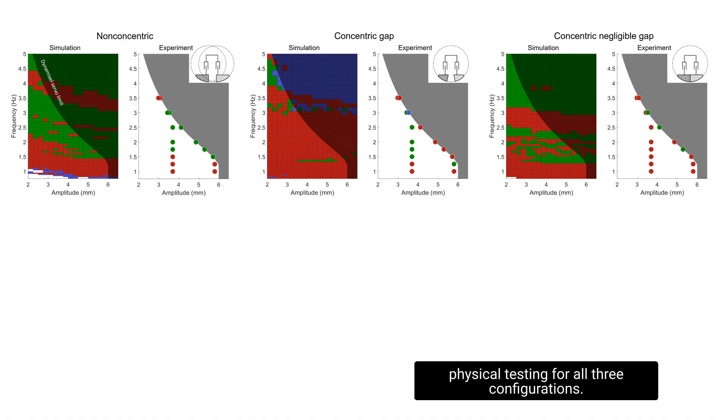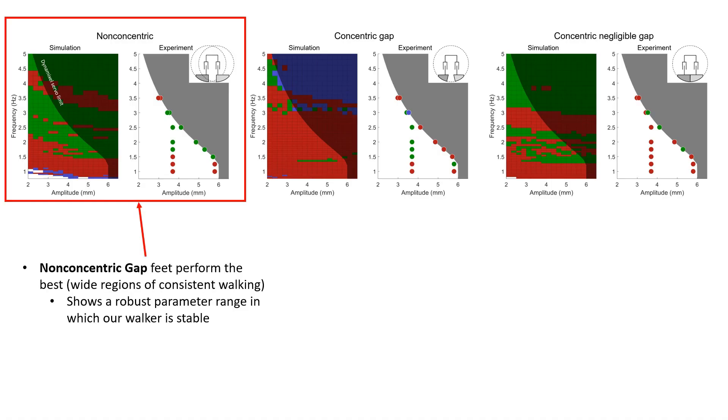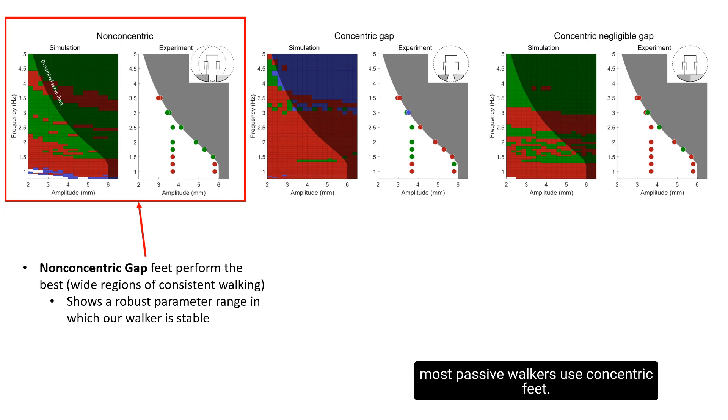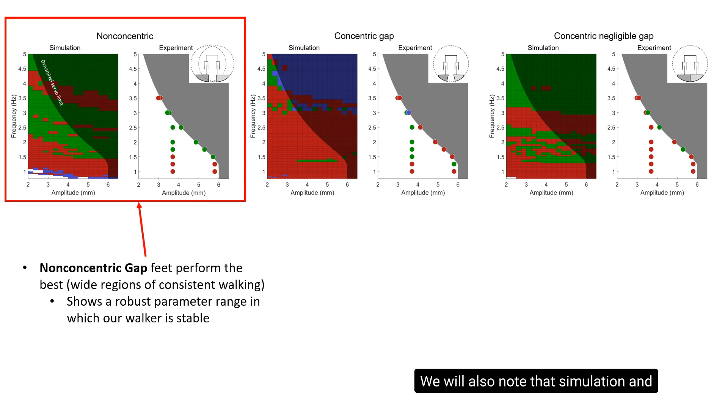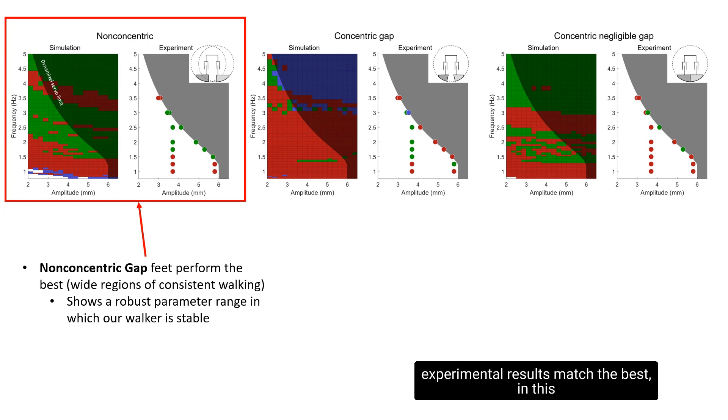These are the results of simulation and physical testing for all three configurations. We noticed that non-concentric gap feet are the most consistent, which is unique as most passive walkers use concentric feet. We also note that simulation and experimental results match the best in this case.